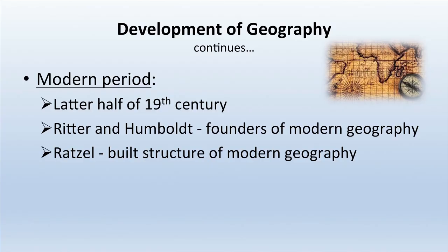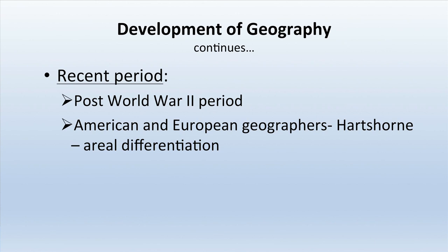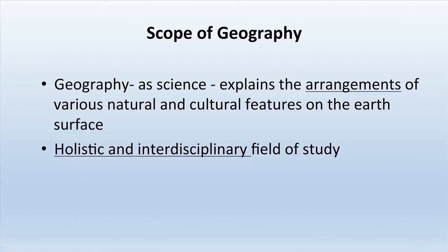The modern period started during the later 19th century. Ritter and Humboldt were the two main geographers identified during this period and are considered the founders of modern geography. Ratzel, another geographer, built the structure of modern geography. The recent period, from post-World War Two, saw American and European geographers flourish. Hartshorne was one of the most eminent geographers of this period and talked about areal differentiation, which gave rise to regional geography.